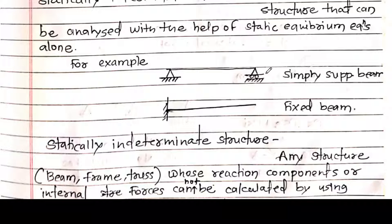We know that to find 2 unknowns we need 2 equations, and to find 3 unknowns we need 3 equations. We have solved simultaneous equations — for example, x + y = 4 and x + 2y = 10. In that case we have 2 equations and can calculate x and y. So here, 3 unknowns can be solved using 3 equations.